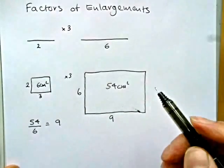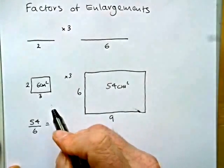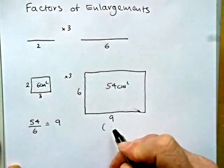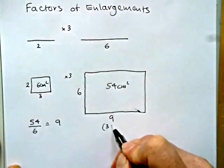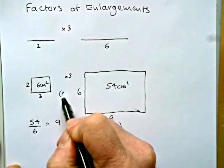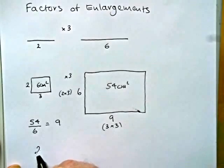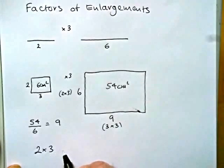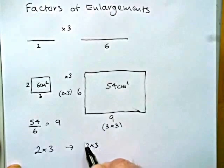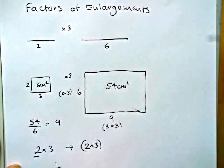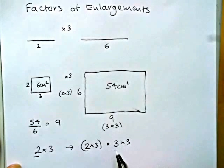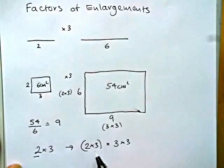And in fact, the reason for this is because we multiplied the base by 3 and we also multiplied the height by 3. So if you look at what we had to start with, 2 times 3, after the enlargement, it became 2 times 3, that's applying the 3 on the 2, times 3 times 3, and that's applying the 3 on the 3.